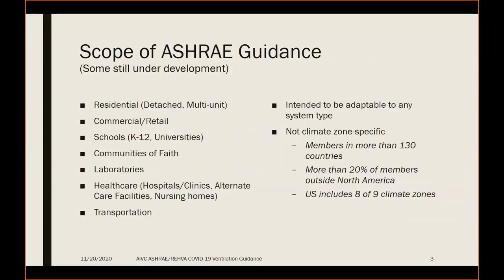The scope of ASHRAE guidance is quite a bit broader in a number of ways than REVA's guidance. It's not specific to North America, nor to a narrow set of building types. It covers a wide range from residential to non-residential to healthcare and also transportation, intended to be adaptable to any system type. One reason for not being climate zone specific is that ASHRAE has members in more than 130 countries, 20% outside of North America, and the U.S. itself includes eight of the nine climate zones.